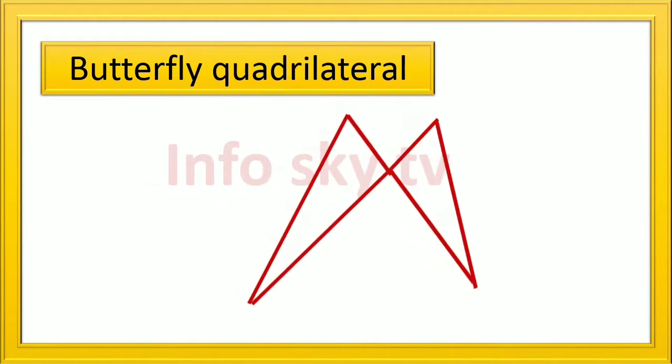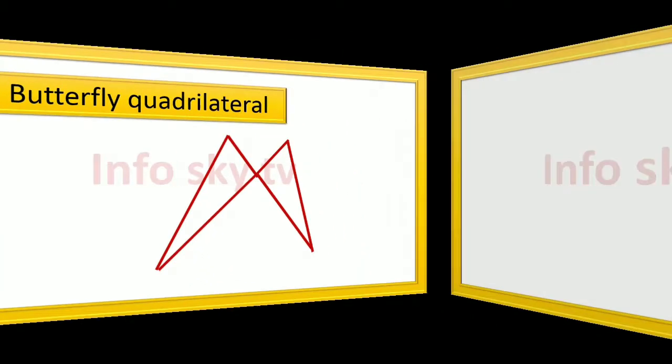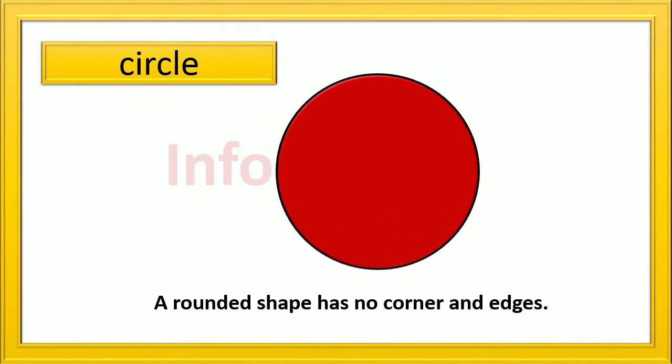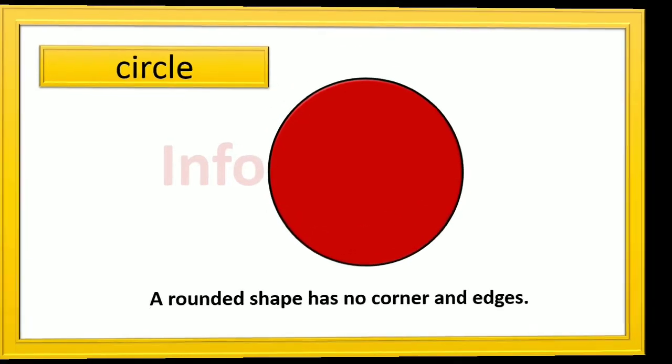Butterfly Quadrilateral. Circle: a rounded shape has no corner and no edges.